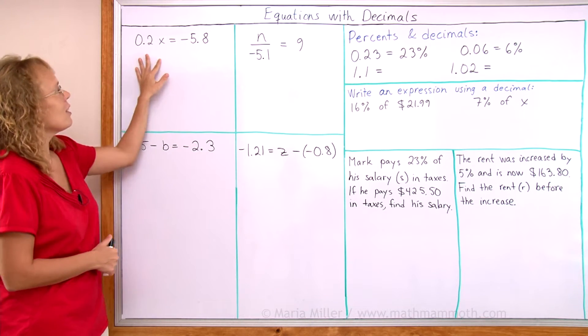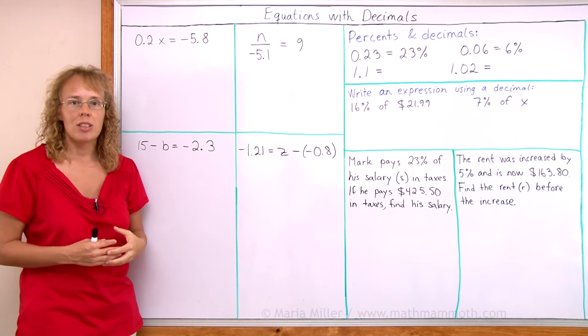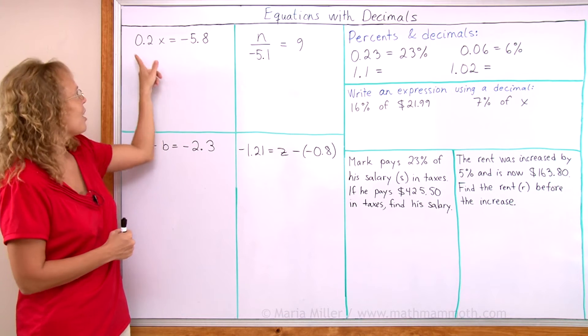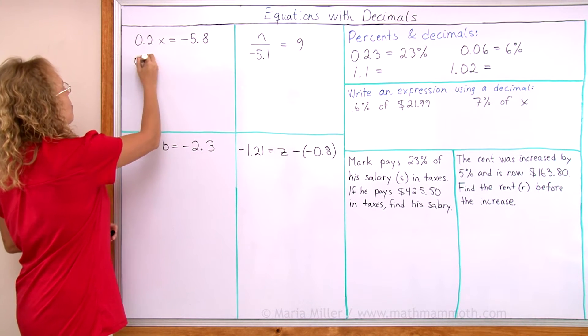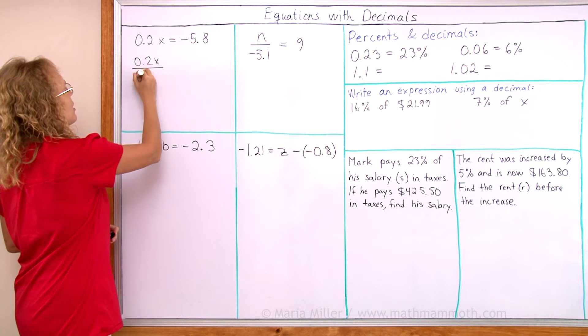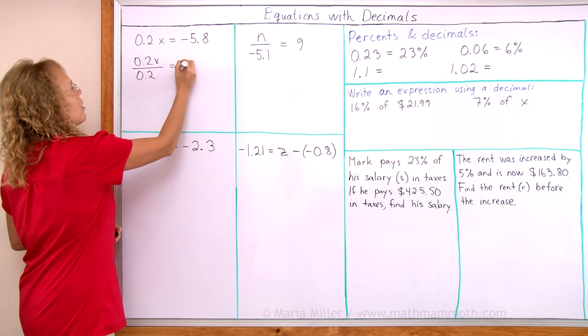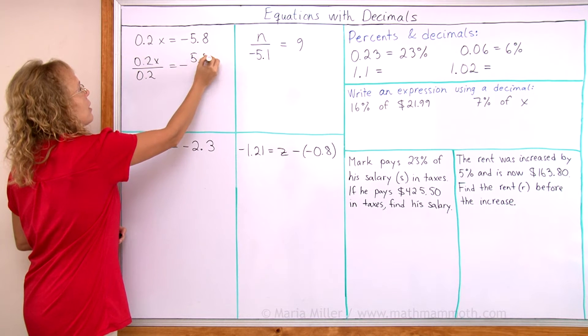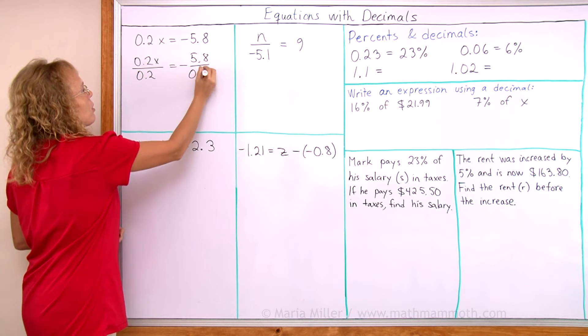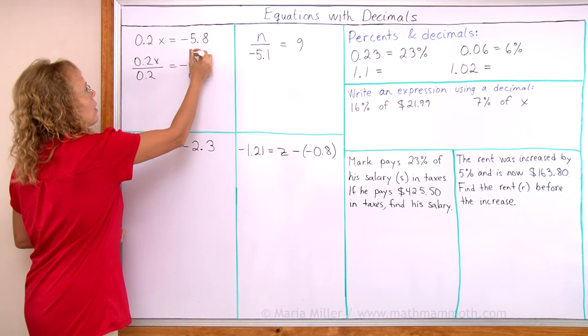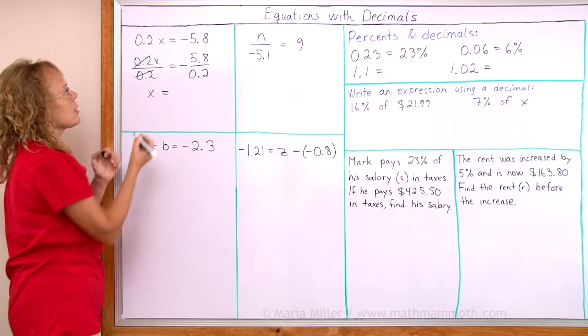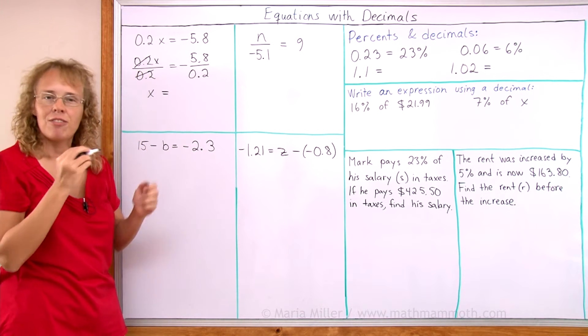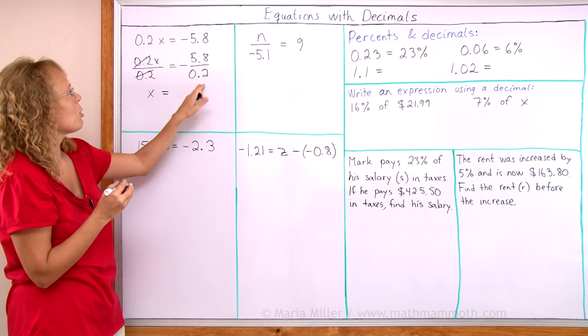For example, this one here is a multiplication equation, so to solve it we need to divide both sides by 0.2. So we get 0.2x divided by 0.2 and over here negative 5.8 divided by 0.2. Here of course this cancels as usual and then x here is negative and then 5.8 divided by 0.2.